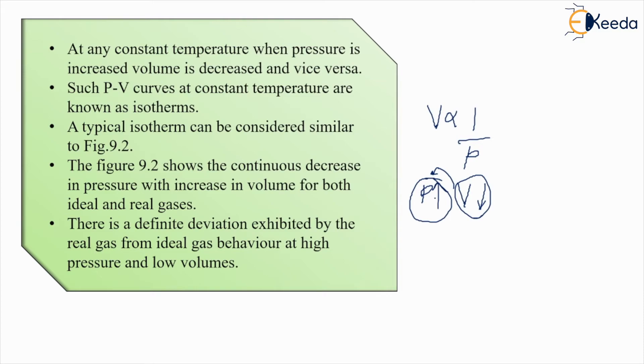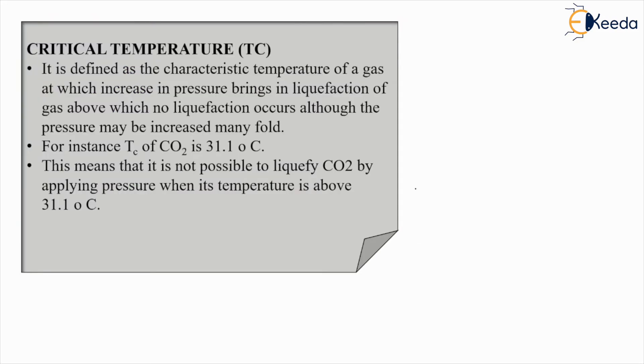Such PV curves at constant temperature are known as isotherms. A typical isotherm can be considered in the figure. To continuous decrease in pressure for both volume for ideal gases, there is a definite deviation exhibited by the real gas from ideal gas behavior at low volumes.